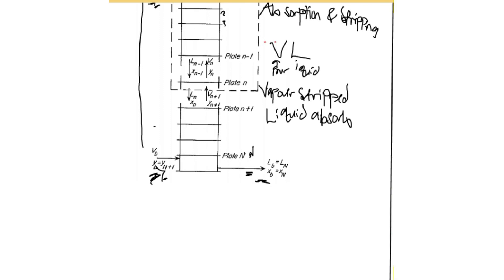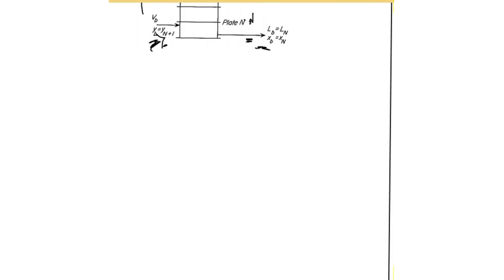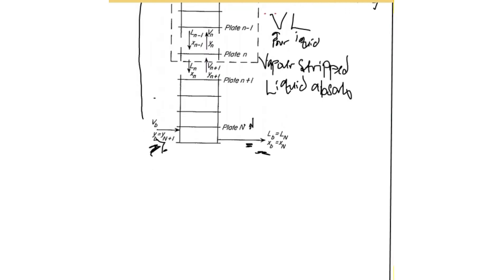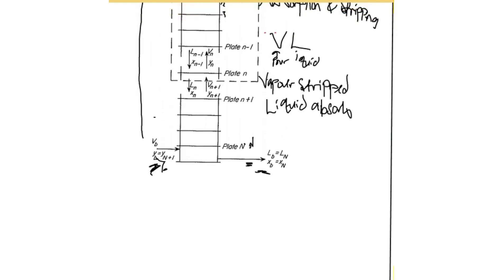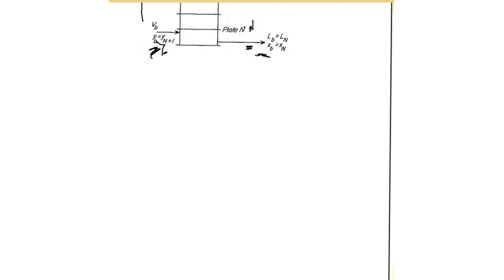So now I've explained what stripping and absorption are, how they happen, how the phases go in, how they mix, and how they exit the column. Now we'll look at how to solve problems of stripping and absorption.